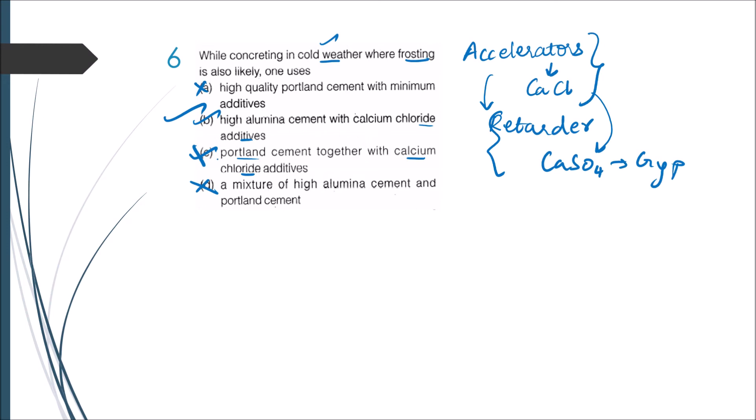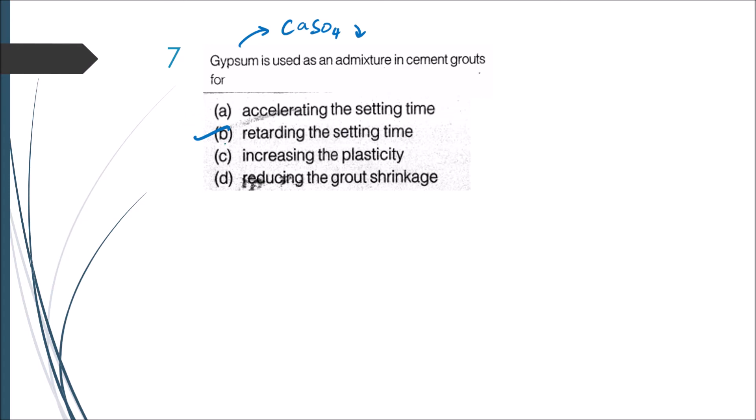Next is: gypsum is used as an admixture in cement grouts for what? Just now we saw what is gypsum - it is nothing but calcium sulfate and it is a retarder. Therefore it will retard the setting time. Answer is option B.